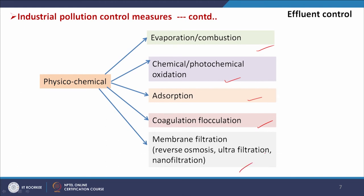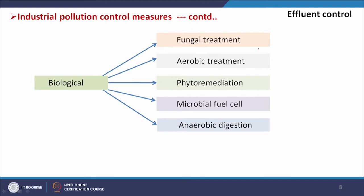Biological treatment methods include fungal treatment, anaerobic treatment, phytoremediation, microbial fuel cells, and anaerobic digestion — all of which have been discussed in previous classes. We have to customize these processes as per the needs of the specific industry and develop a specific flow sheet for wastewater treatment in the respective Effluent Treatment Plant (ETP).